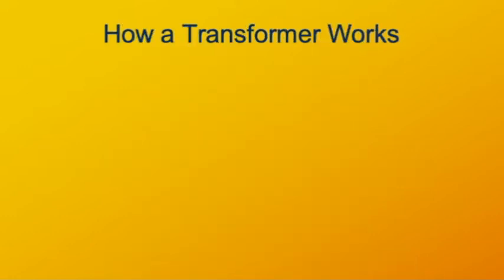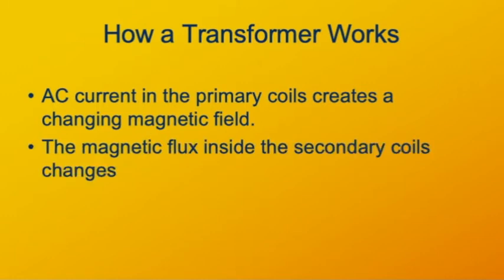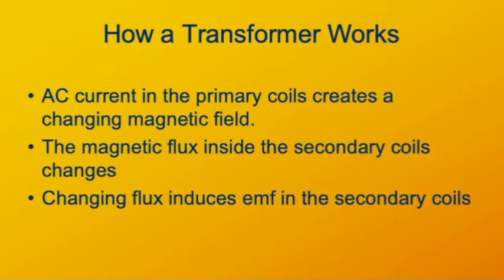In written words, the main idea of a transformer is that an AC current in the primary coils creates a changing magnetic field in the core. This means that the magnetic flux inside the core also changes with time, inducing an EMF in the secondary.